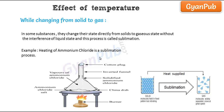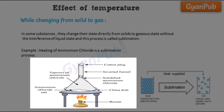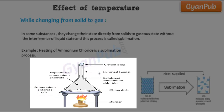For example, heating of ammonium chloride is also a sublimation process. If ammonium chloride is heated in a china dish, it changes its state directly to gaseous state without the interference of liquid state. The gaseous ammonium chloride then sticks to the walls of the inverted funnel and is converted back into solidified ammonium chloride.